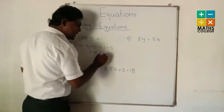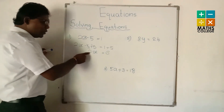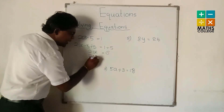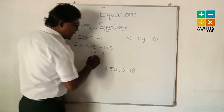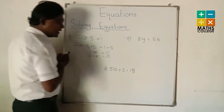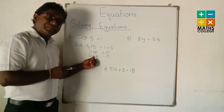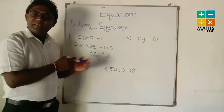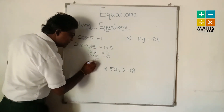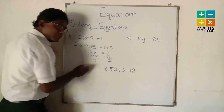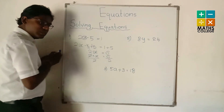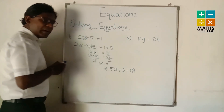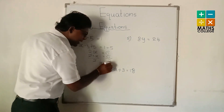1 + 5 is 6. Now 2x remains. 2x means 2 multiply x. So 2 × x = 6. The opposite operation of multiplication is division. We divide by 2 on both sides — 2 cancels 2 — and x = 6 ÷ 2. The answer is 3.